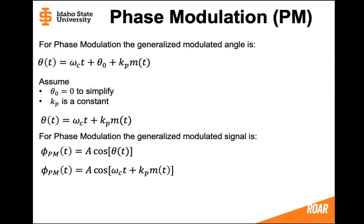For phase modulation, the generalized modulation angle is going to be theta(t) equals the carrier frequency multiplied by t, plus some theta-naught, plus kp times the message. It's okay to assume that theta-naught equals zero, which simplifies this. We can also assume that kp, the modulating constant, is a constant. This leads to theta(t) equals omega_c times t plus kp times the message. So the phase modulated signal phi_pm is equal to A cosine of omega_c*t plus kp times the message.